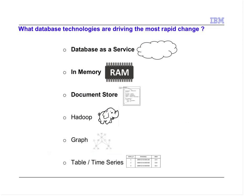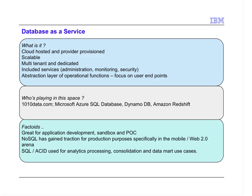So what technology is driving the most change? What database innovations are driving this commoditization and new level of adoption? I believe there are six key technologies at play: database as a service — essentially cloud-based databases; in-memory, leveraging the fact that Moore's Law is making RAM cheaper and more accessible; document stores; Hadoop; graph technologies; and time series types of data. For the rest of my discussion, I'd like to focus on three of these items. I'll go through what those are, who some of the key players are in each technology, and some use cases.